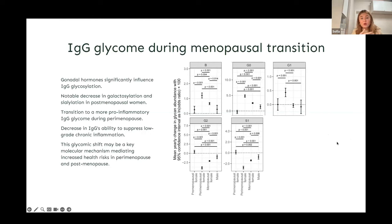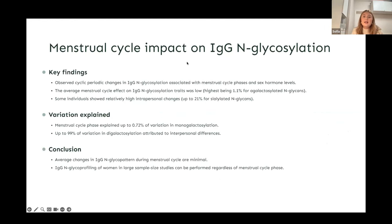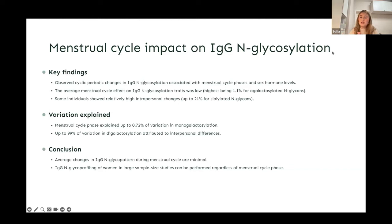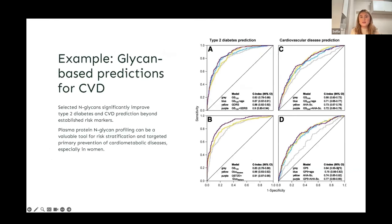An important disclaimer: for women who are pre- or perimenopausal and still have their menstrual period, the stage of the menstrual cycle will not impact glycan age results. This is because it typically takes three to six months to see changes with any intervention, and the same applies to the menstrual cycle — so testing can be done at any point in a client's menstrual cycle.